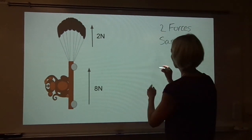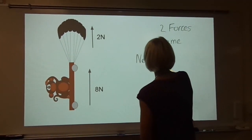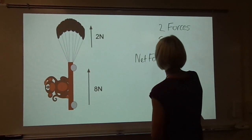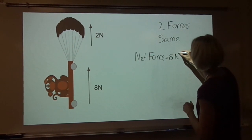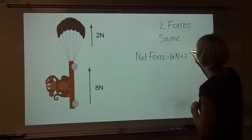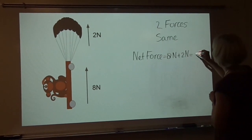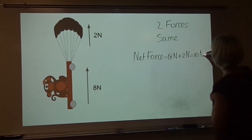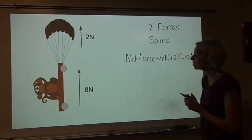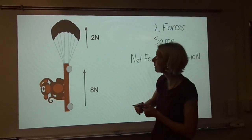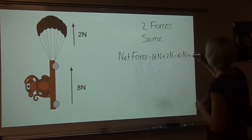So in this case, we're going to calculate net force: we have 8 newtons plus 2 newtons, and that will give us a total of 10 newtons. Of course, we need to determine the direction of the net force. Both forces are directed upward, so we can say 10 newtons up.